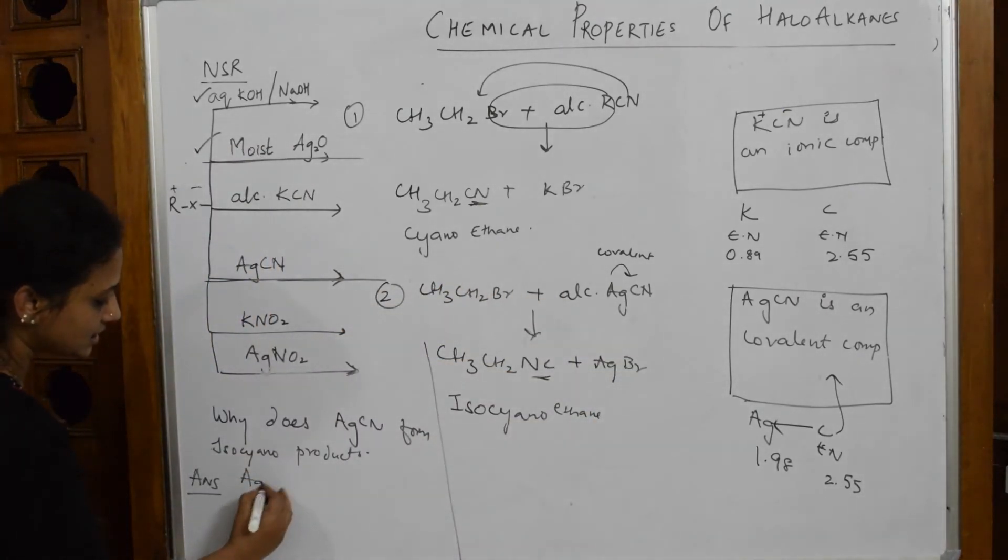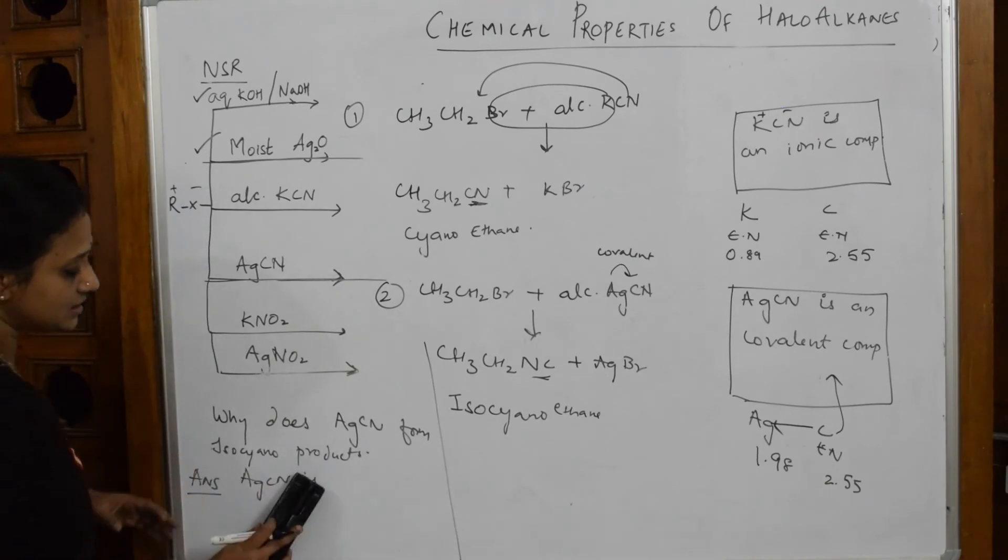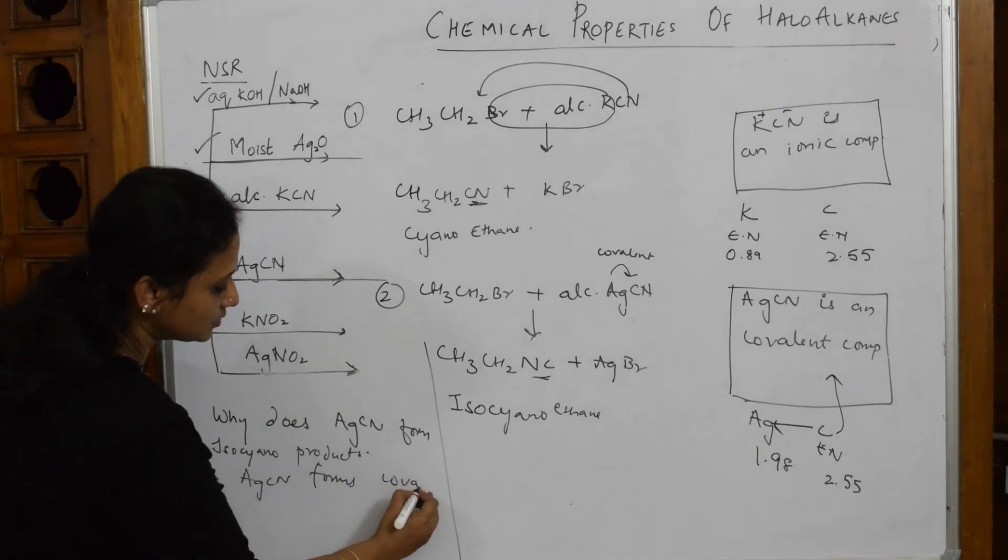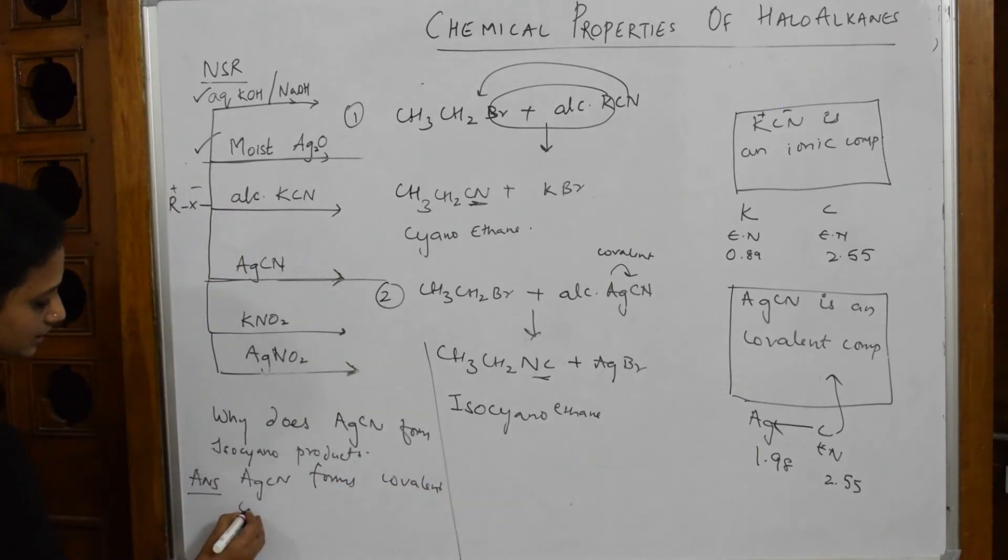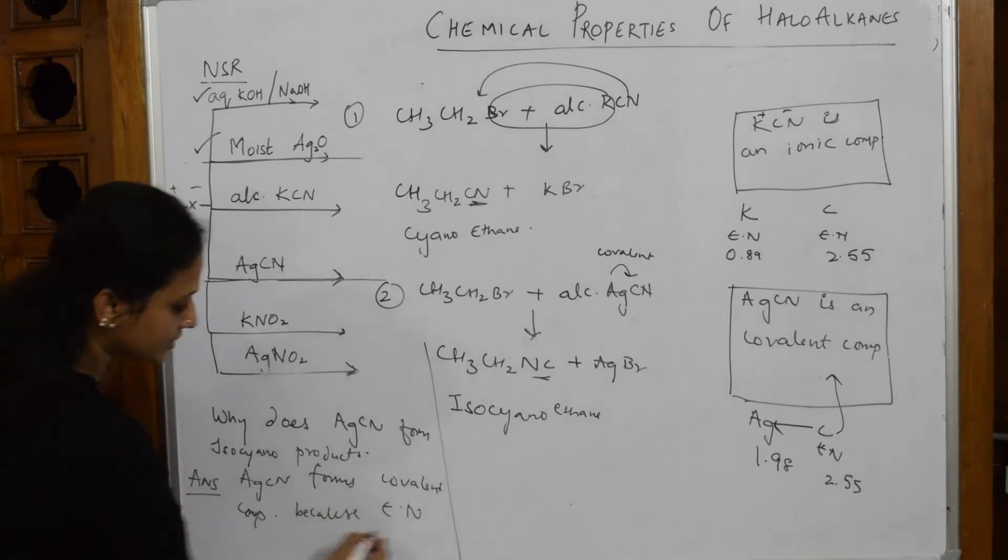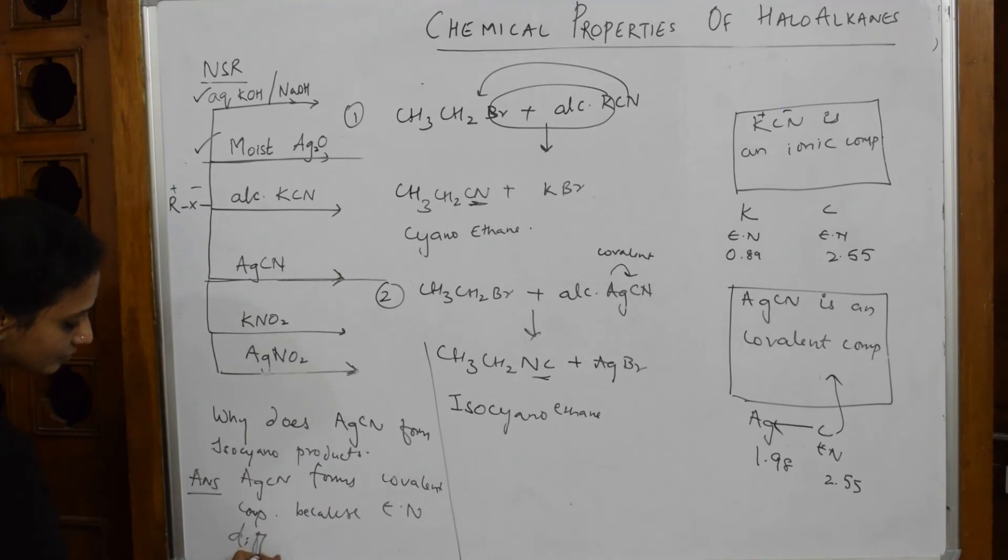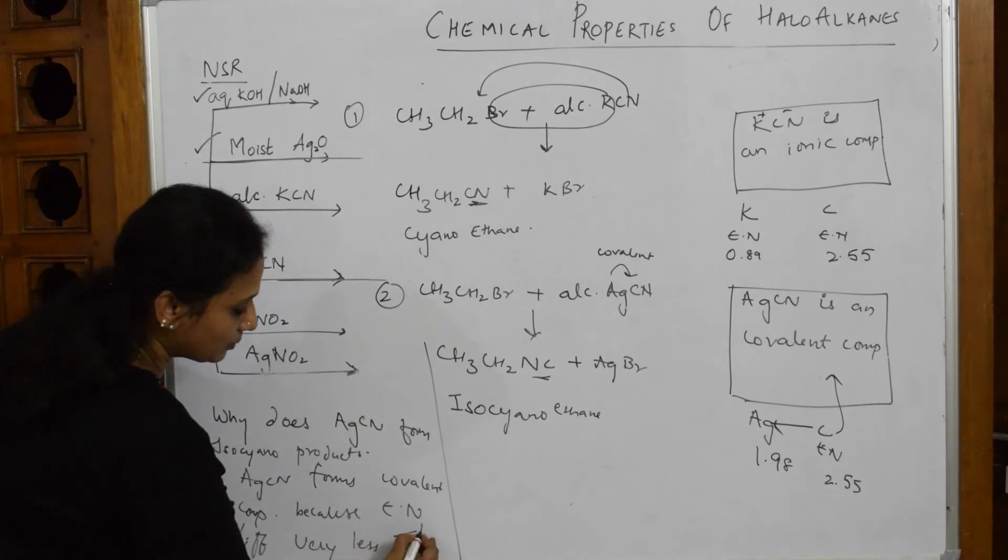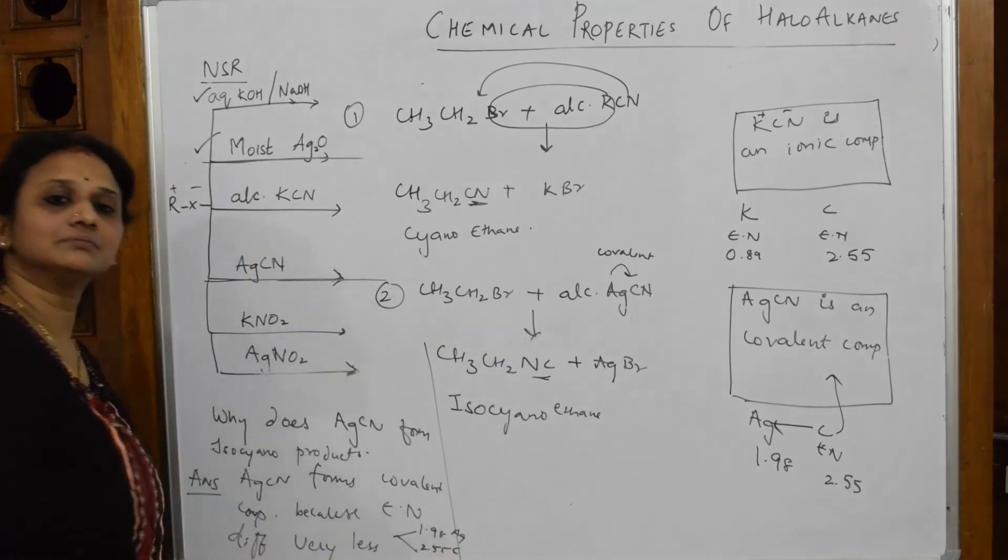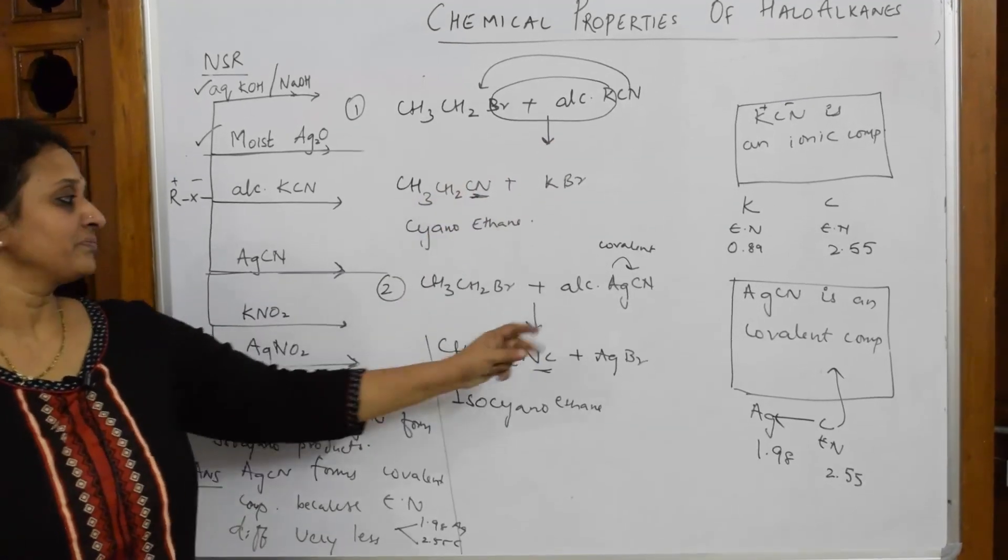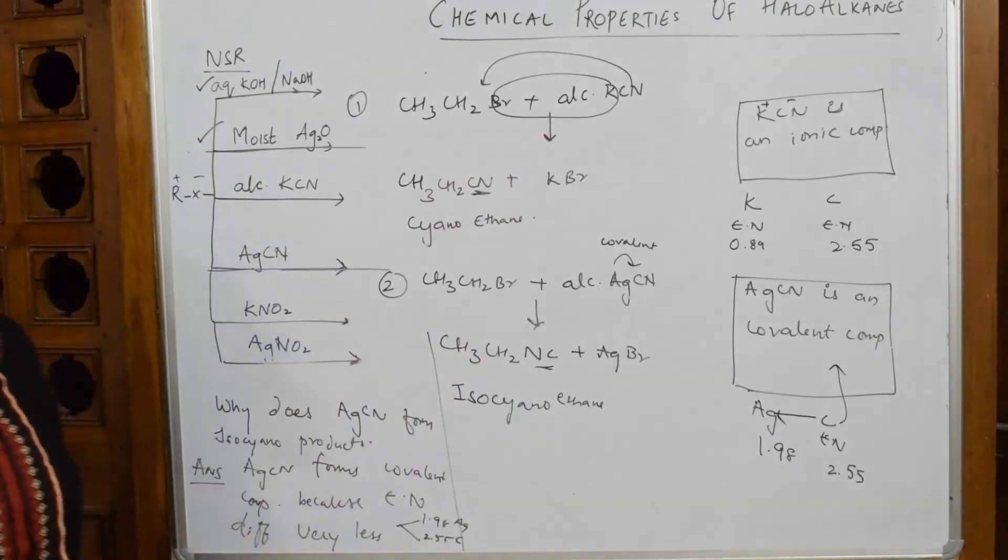What answer will I write? Highlight my answer clearly. Just write: AgCN forms covalent compounds because the electronegativity difference is very less. That is 1.98 for silver and 2.55 for carbon. That is the reason it forms this. Am I clear? KCN is CN, AgCN is NC. Please note it.